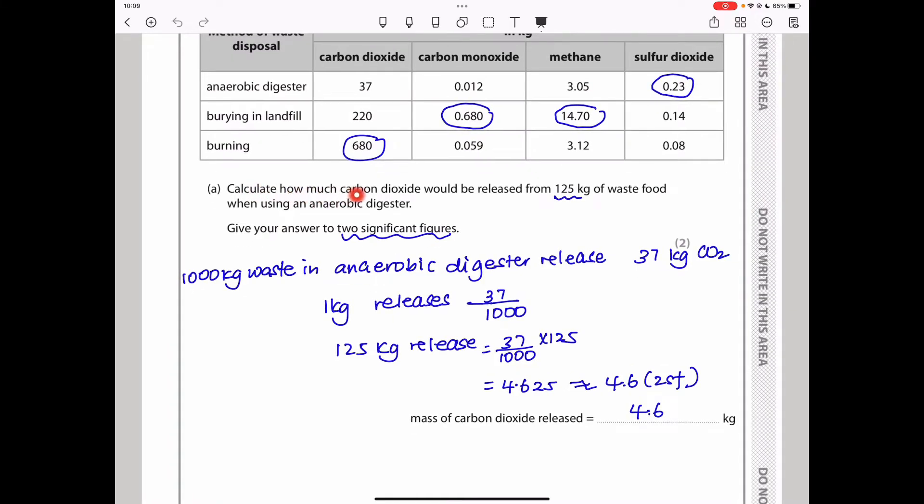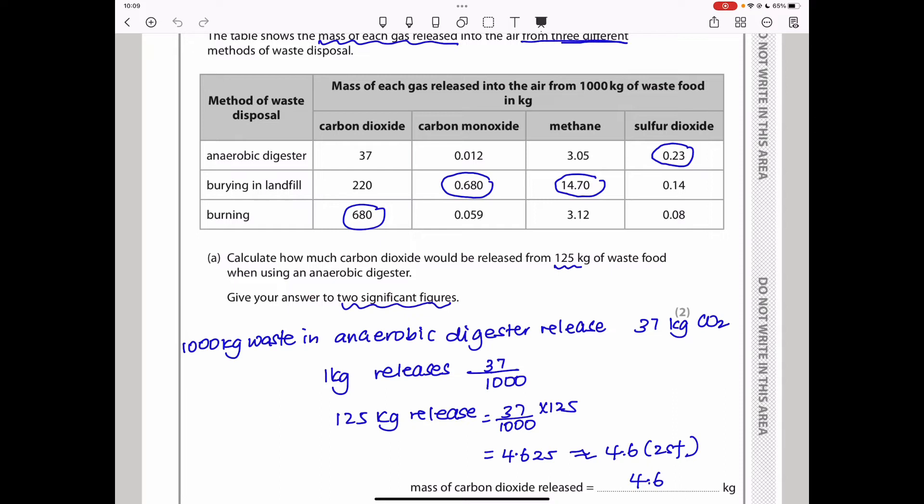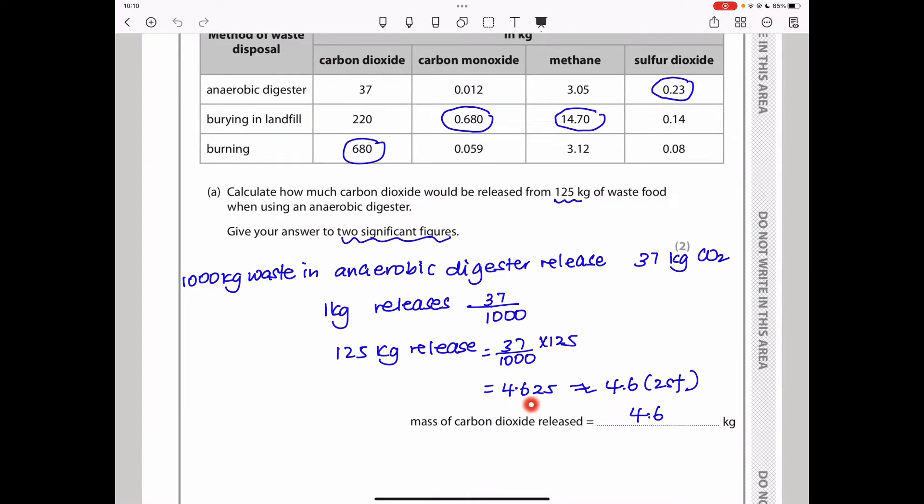Calculate how much carbon dioxide would be released from 125 kilograms of waste food when using an anaerobic digester. Anaerobic digester produces 37 kilograms of carbon dioxide per 1,000 kilograms of waste food. In 1,000 kilograms of waste food in an anaerobic digester, we release 37 kilograms of CO2. It means 1 kilogram will release 37 divided by 1,000. So 125 kilograms will release 37 divided by 1,000 times 125, which gives us 4.625. However, they say put your answer in two significant figures, which is 4.6 kilograms.